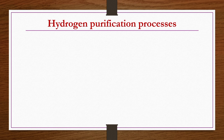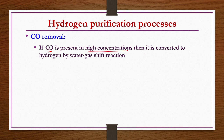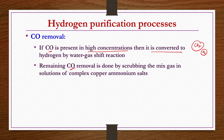Now we look at hydrogen purification processes — CO removal. If CO is present in high concentration, it is converted to hydrogen via the water gas shift reaction in the presence of iron oxide: CO + H2O → CO2 + H2. CO2 is then removed by MEA solutions. Remaining trace CO is removed by scrubbing with a solution of complex copper ammonium salts.